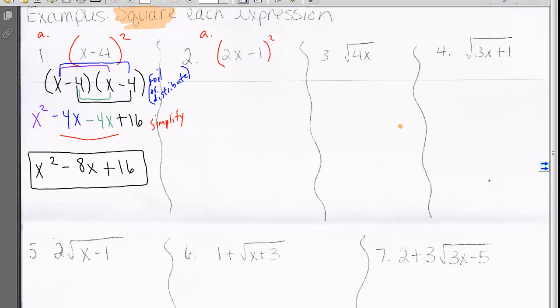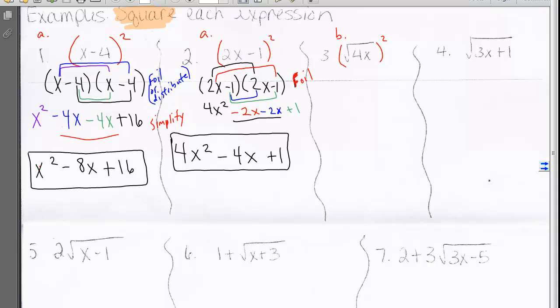The second one is also type A. 2x minus 1. When we square it, we use FOIL and distribute over all terms to get 4x squared minus 2x minus 2x plus 1. Combining like terms gives us 4x squared minus 4x plus 1.